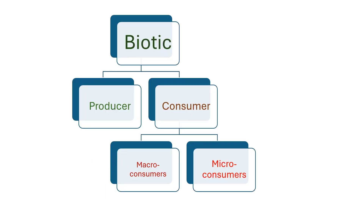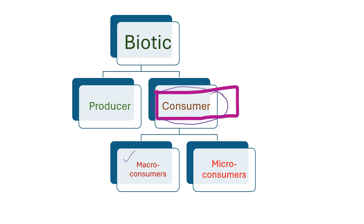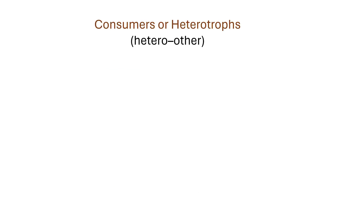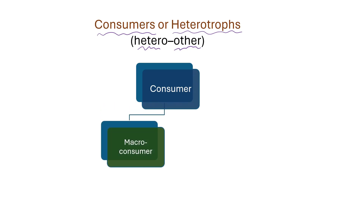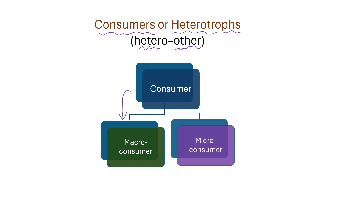Now, we will discuss another biotic component: the consumers. Consumers are also known as heterotrophs — 'hetero' meaning other, so heterotroph means other nourishment. Heterotrophs, or consumers, cannot produce their own food; they rely on consuming other organisms for their energy. There are two types of consumers: macro-consumers and micro-consumers.